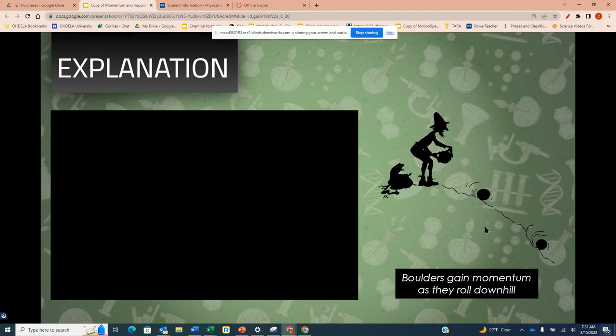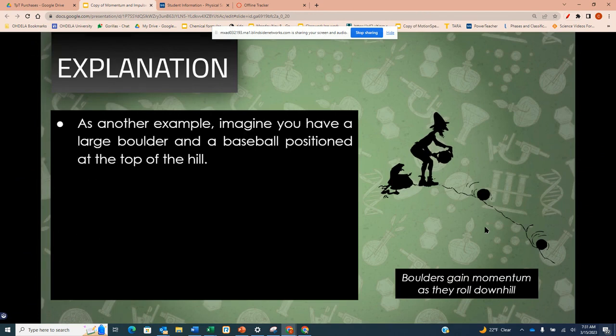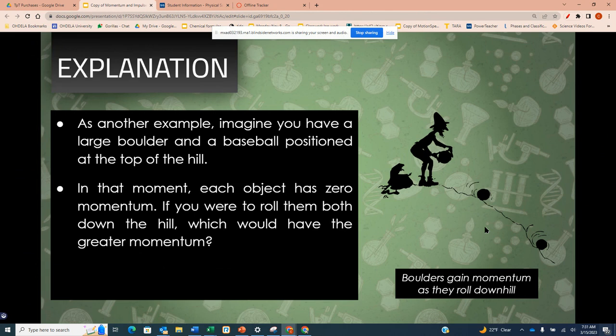Boulders gain momentum as they roll downhill. Another example: imagine you have a large boulder and a baseball positioned at the top of the hill. In that moment, each object has zero momentum. If you were to roll them both down the hill, which would have the greater momentum? Which would be harder to stop at the bottom of the hill?